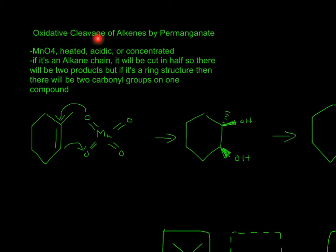So for the oxidative cleavage of alkenes by permanganate, you'll need MnO4 heated, acidic, or concentrated. So this will be different from the cold reaction because this is the product of the cold reaction of MnO4.